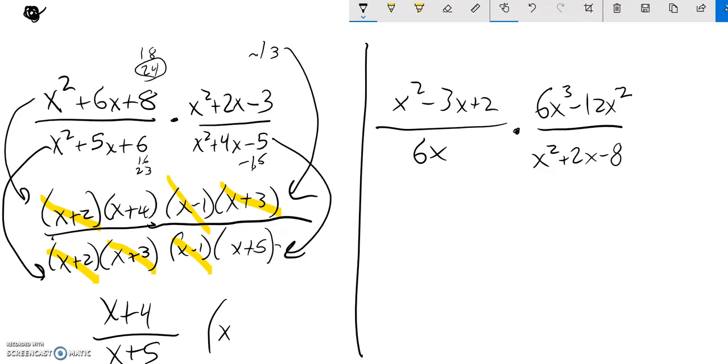But I want to note the things that x cannot be. x cannot be negative 2, negative 3, 1, or negative 5. There's my answer. So next one.